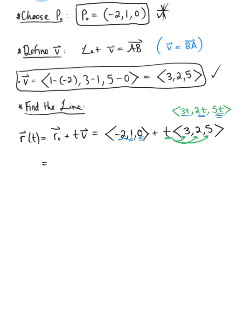So this leaves us with the vector negative 2 plus 3t. We have 1 plus 2t, and then 0 plus 5t. So we have the vector valued equation of the line. But just be careful. We don't want the vector valued equation. We want the parametric equations. So we want to think about the individual components as their own functions of t.